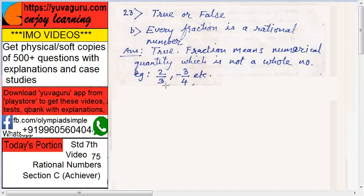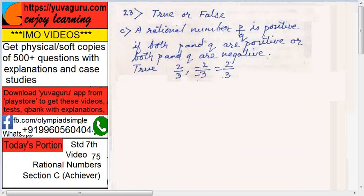Q should not be equal to 0 in both fraction and rational. A rational number p upon q is positive if both p and q are positive or both p and q are negative, means both numerator and denominator should be plus or both should be minus.